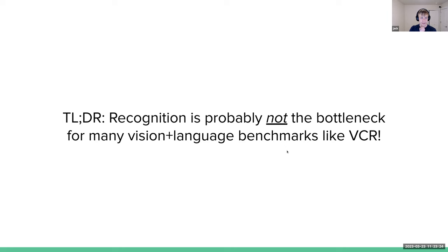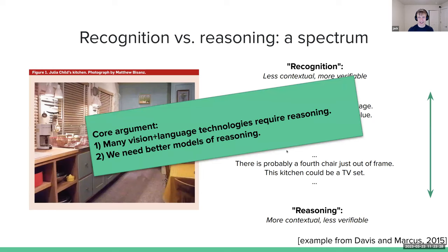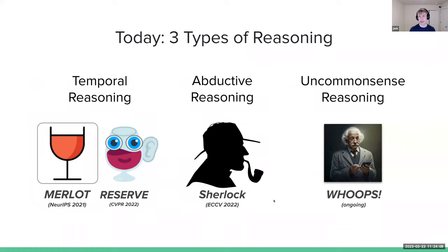That completes the core argument. Point zero: multimodal models are really cool and I would highly recommend them as a research topic. The first part of the core argument is that to build cool language technologies, we need reasoning-style inferences. The second part is that we're not very good at this. So this is the case for reasoning beyond recognition. For the rest of today, I'll talk about a few of our projects where we're trying to push beyond recognition-style inferences toward more reasoning-style ones.